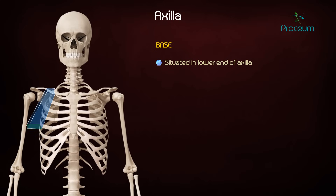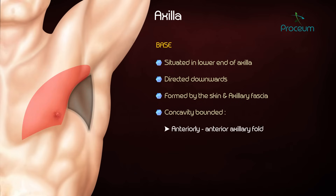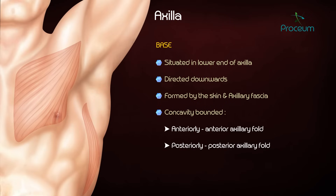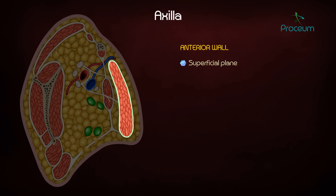The base is situated in the lower end of the axilla and is directed downwards. It is formed by the skin and axillary fascia. It presents a concavity bounded anteriorly by the anterior axillary fold and posteriorly by the posterior axillary fold. The anterior axillary fold is formed by the lower border of the pectoralis major muscle. The posterior axillary fold is formed by the latissimus dorsi and teres major tendons. Medially, the base is bound by the chest wall.